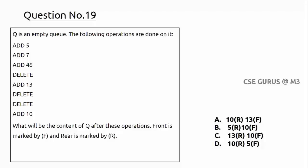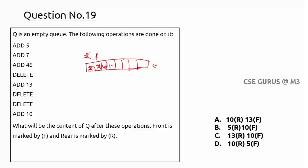Question number 19 is about queue operations. Start with an empty queue with front and rear. Add 5 from rear. Add 7. Add 46. Delete: 5 is removed from the front, front moves to 7. Add 13. Delete twice: 7 is deleted first, then 46 is deleted.